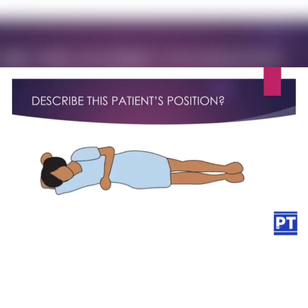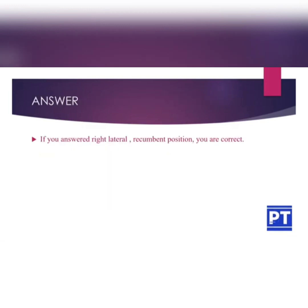In this next example, the patient is in a recumbent position — lying on one side — and the patient's right side is in contact with the image receptor. So the correct answer to describe this patient position is right lateral recumbent position.